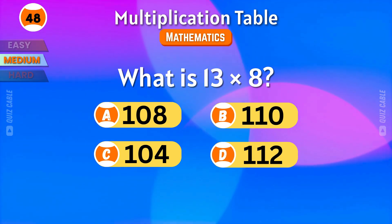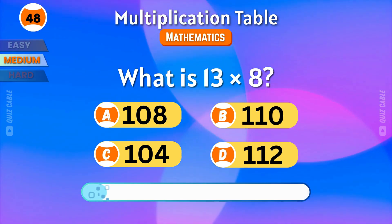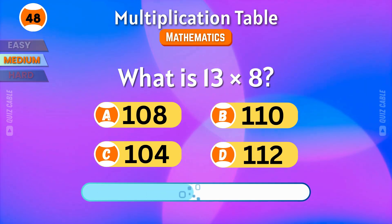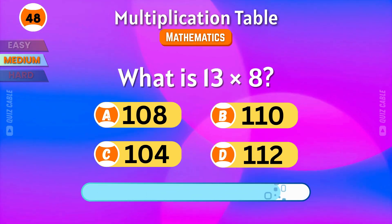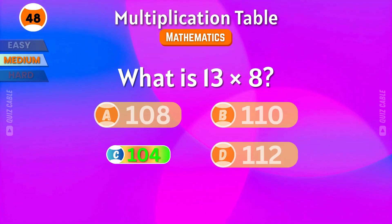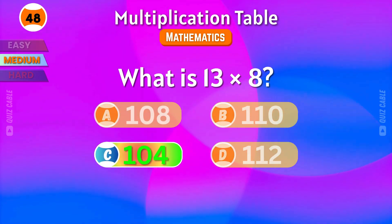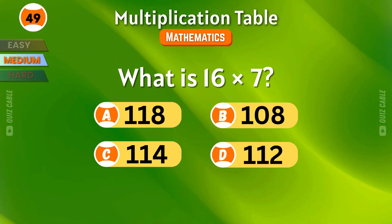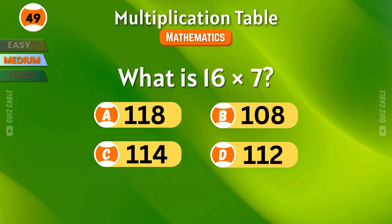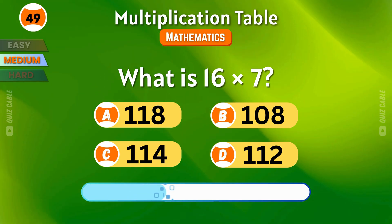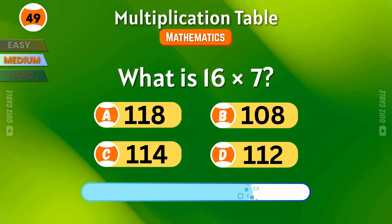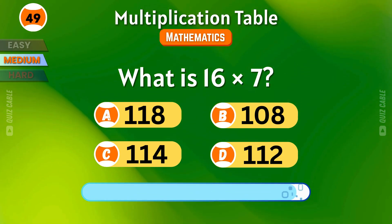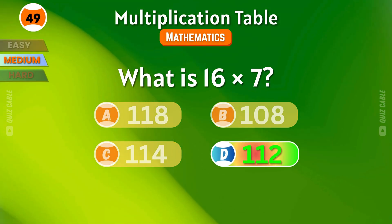What is 13 times 8? The result is 104. What is 16 times 7? That's 112.